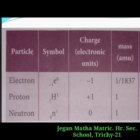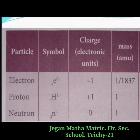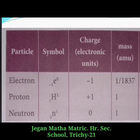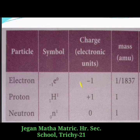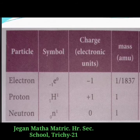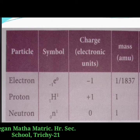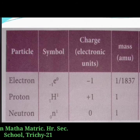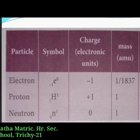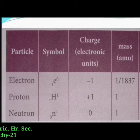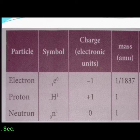Let us see the properties of subatomic particles. The electron symbol is ⁰e⁻¹. The charge of the electron is −1, its mass is 1/1837 atomic mass unit, and its mass in grams is 9.11 × 10⁻²⁸ grams. The next subatomic particle is the proton, symbol ¹H¹. The charge of the proton is +1. Its mass is one atomic mass unit, and in grams it is 1.6 × 10⁻²⁴ grams.